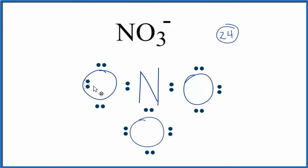What we could do is move a pair of electrons between the oxygen and the nitrogen here to form a double bond. When we do that, this oxygen still has eight, but now the nitrogen has eight. So everything has an octet. This is the Lewis structure for the NO3 minus ion, the nitrate ion.